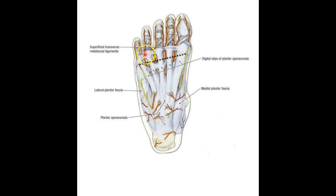What I've learned over many years of teaching this course is that the plantar fascia is really three distinct anatomical structures. The first is the lateral plantar fascia. The second — the most centralized, probably the densest and thickest portion — is called the plantar aponeurosis. And then last but not least is the medial plantar fascia.